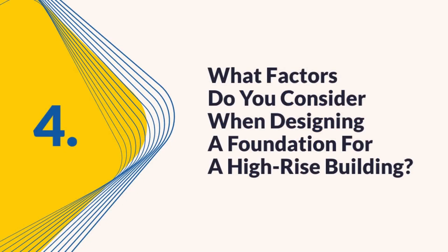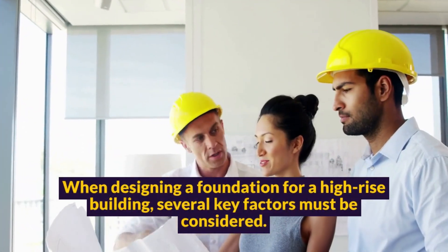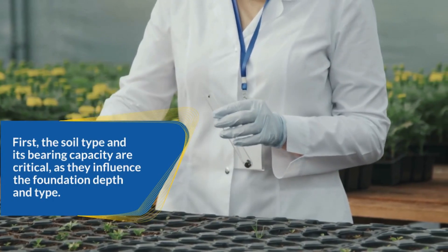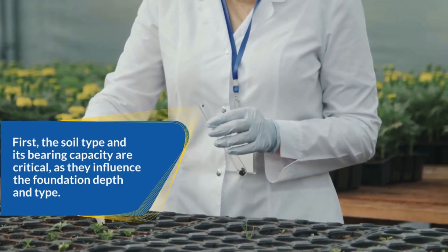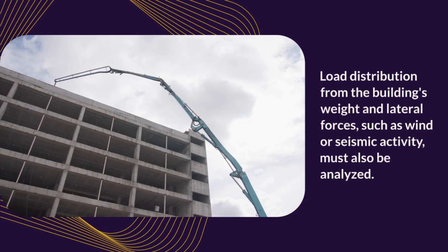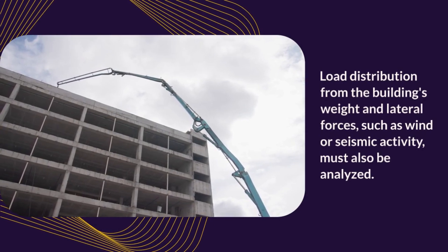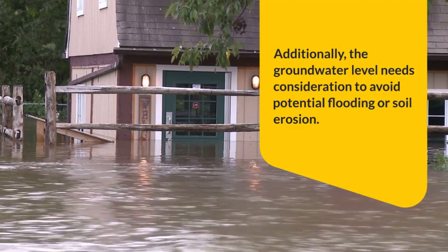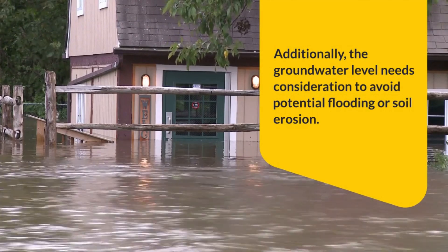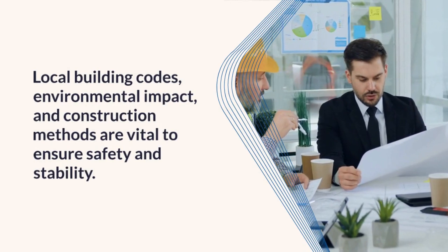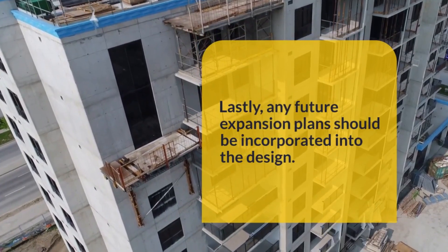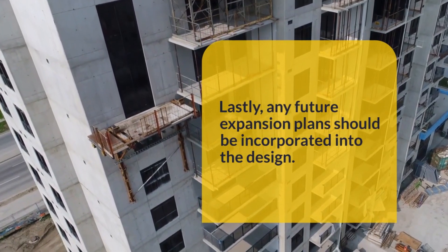Question 4: What factors do you consider when designing a foundation for a high-rise building? When designing a foundation for a high-rise building, several key factors must be considered. First, the soil type and its bearing capacity are critical, as they influence the foundation depth and type. Load distribution from the building's weight and lateral forces, such as wind or seismic activity, must also be analyzed. Additionally, the groundwater level needs consideration to avoid potential flooding or soil erosion. Local building codes, environmental impact, and construction methods are vital to ensure safety and stability. Lastly, any future expansion plans should be incorporated into the design.